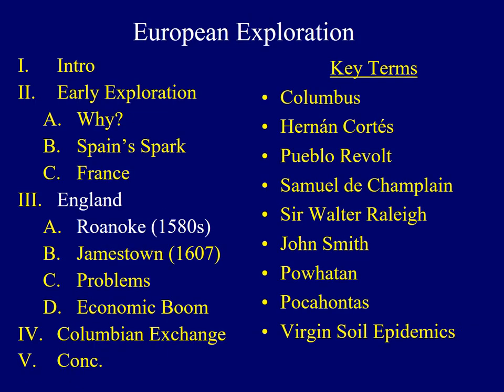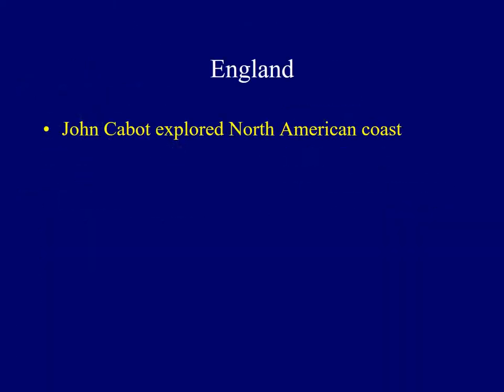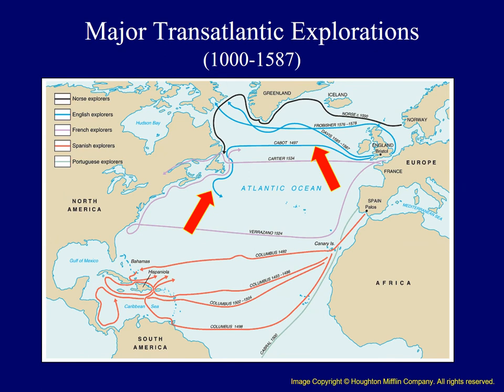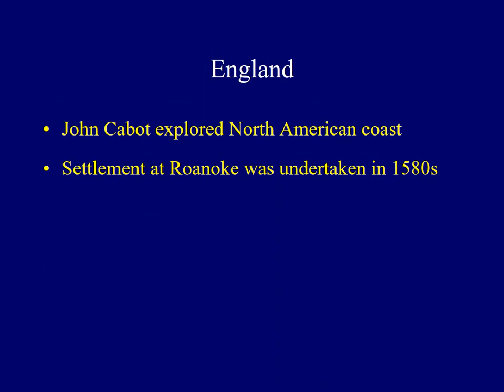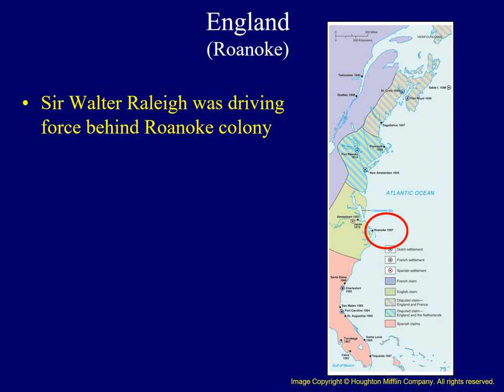England's exploration and settlement was also important. England's excursions began in the late 15th century when John Cabot was hired to explore the North Atlantic, making his travels in 1497. While Cabot's explorations were a start, the English didn't try to establish a settlement for some time. The first attempt undertaken by England took place in the 1580s at Roanoke. Sir Walter Raleigh was the most important person associated with the establishment of Roanoke, helped by his personal relationship with England's Queen Elizabeth. The proposed colony was located off the coast of what is now North Carolina.